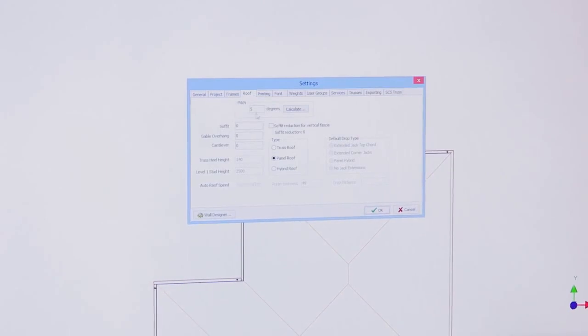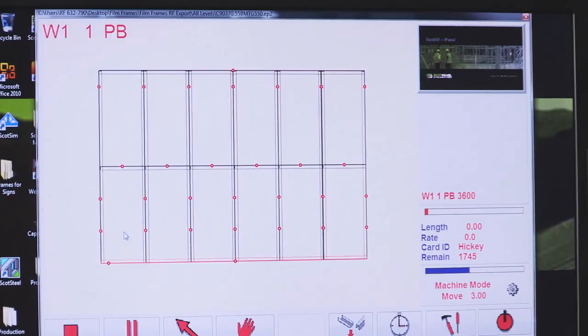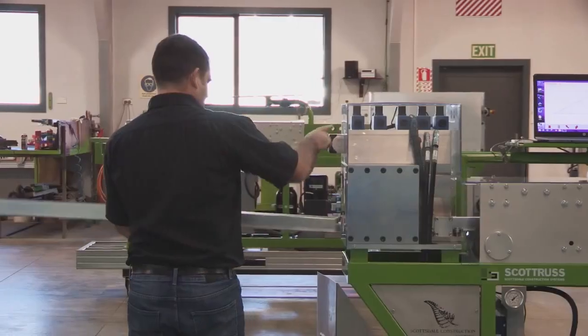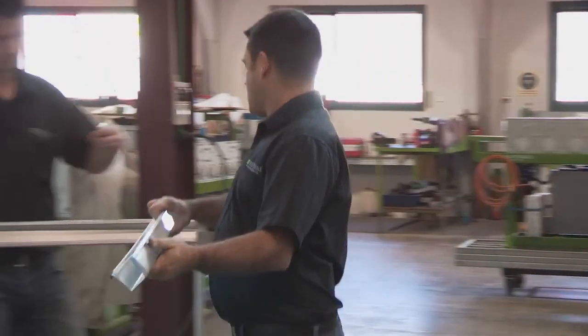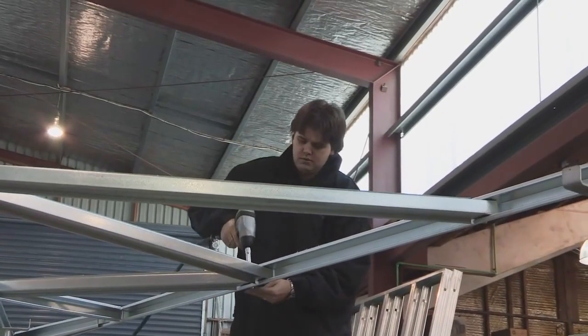Structures are designed and engineered in the Scottsdale software which is then exported to the roll former. The roll former then produces the design. As members are extruded from the roll former, the fabrication team assembles the framing.